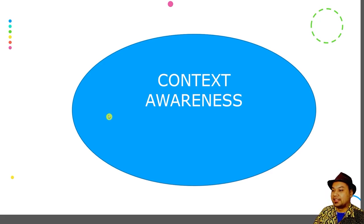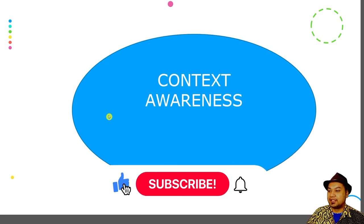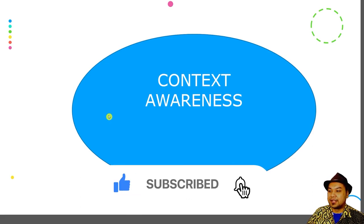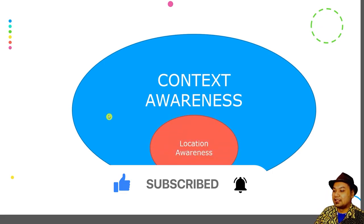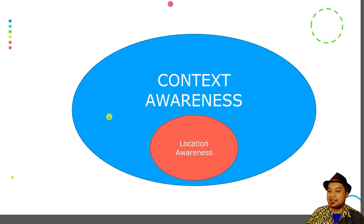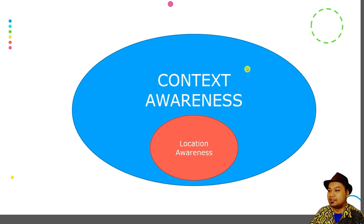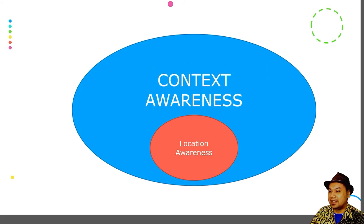To recap: context awareness refers to the capability of an application or device to respond to the situational environment, which may also include location awareness. Location awareness is a subset of context awareness. When talking about location awareness you are also talking about context awareness, but the reverse is not necessarily true. Context awareness is much more vast and may also include user profiling, machine learning, recommendation systems, and activity recognition.